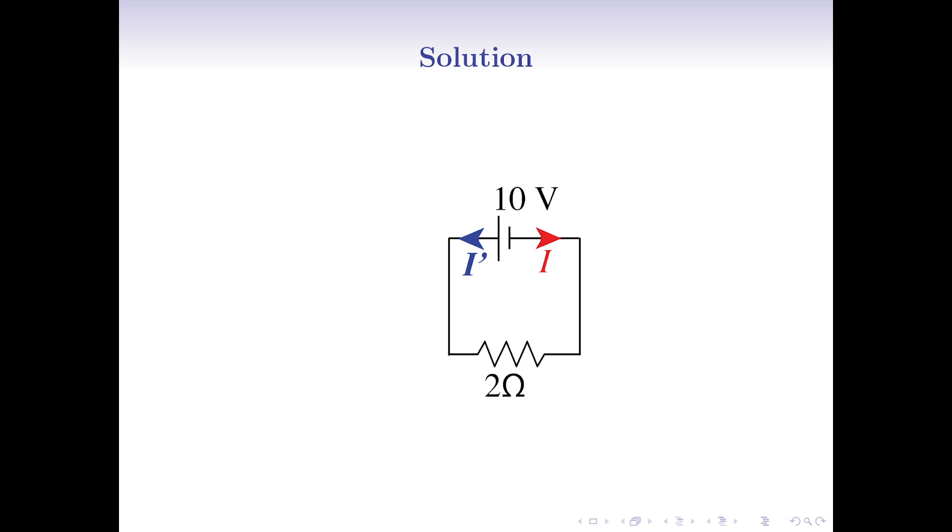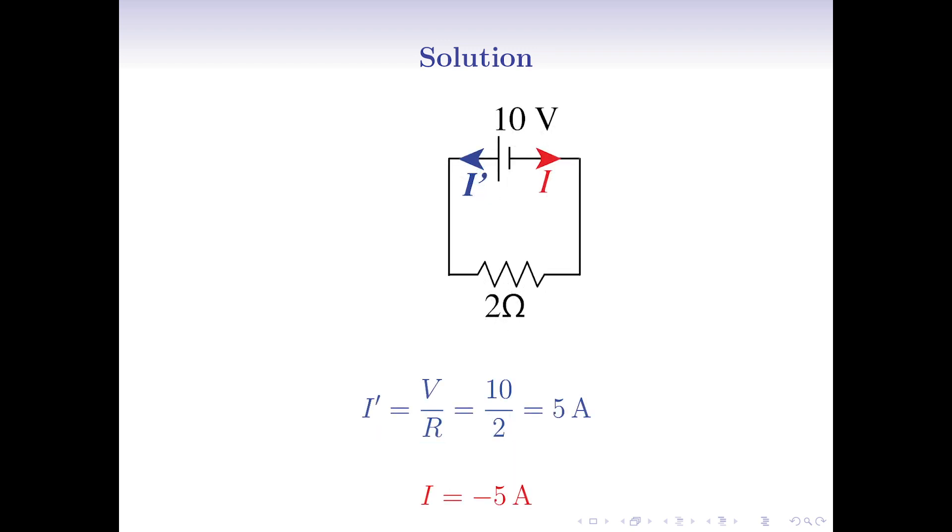So, by Ohm's law, the current I prime is V divided by R, which is 5 amper. Since the current I is in the reverse direction of the current I prime, we understand that the current I is minus 5 amper.